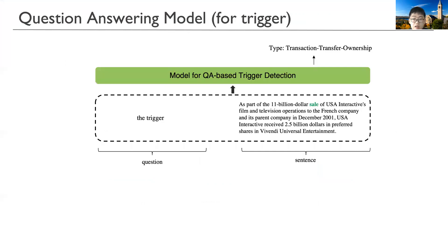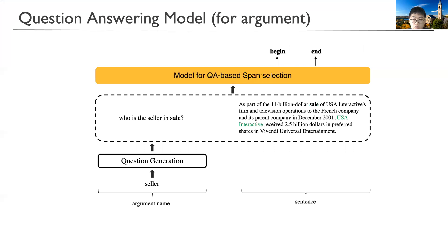More specifically, for the trigger detection QA model, we instantiate the question template with a fixed question, and the model predicts the position and type for the event trigger words. For the argument extraction QA model, question templates are instantiated for each possible argument accordingly, and the model predicts the beginning and end offset for the argument span.